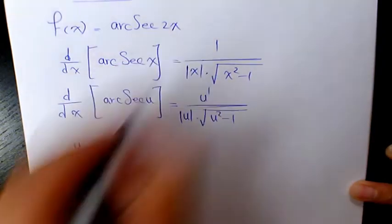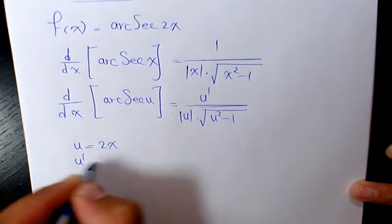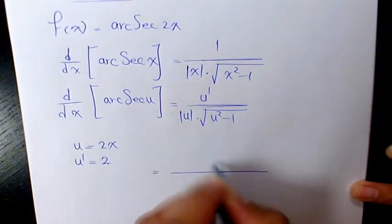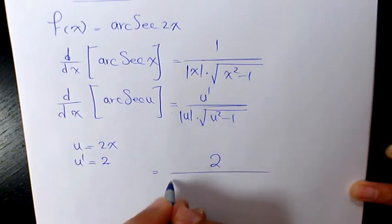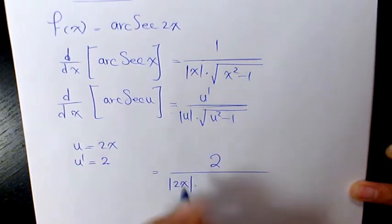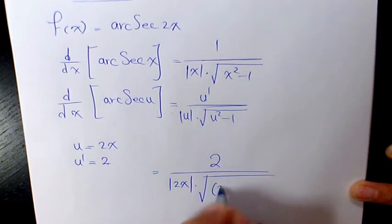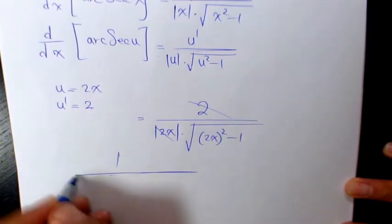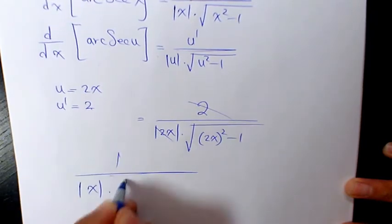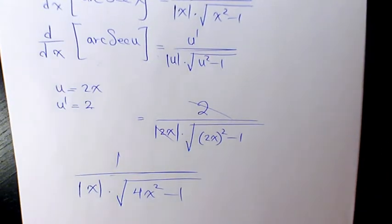In this case, u is 2x, u prime is 2, so it's going to be 2 over absolute function of u is 2x, square root of 2x to the power of 2 minus 1. This 2 and 2 cancels out. It's going to be 1 over absolute function of x times square root of 4x squared minus 1.